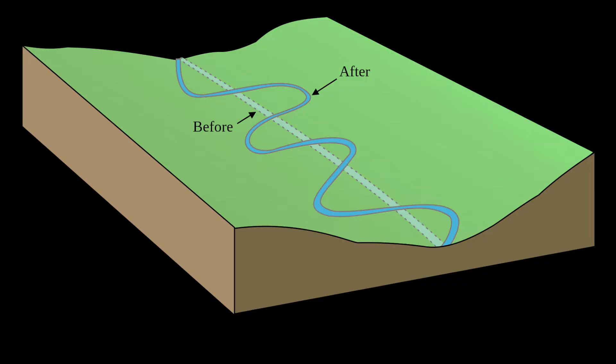The way a meander first forms is because there is hard rock in the middle and the water is unable to go straight through it, so instead it has to go round it, thus forcing away the soft rock, creating the bend.